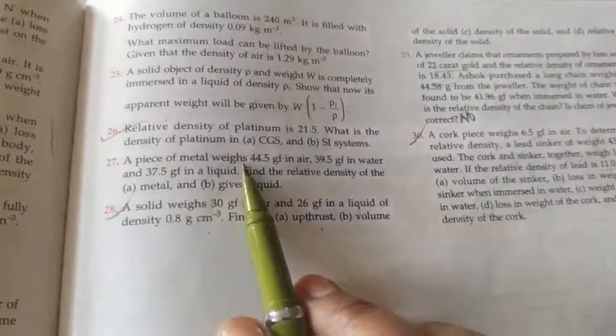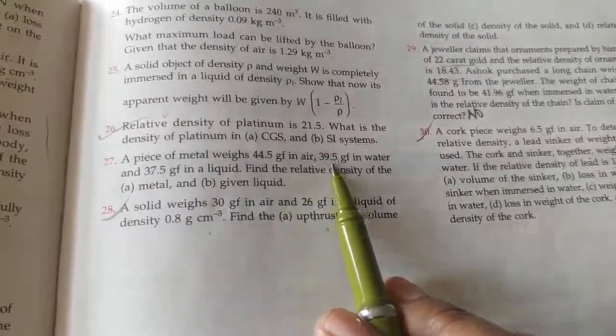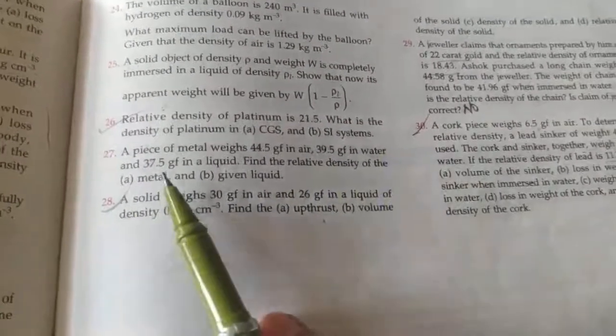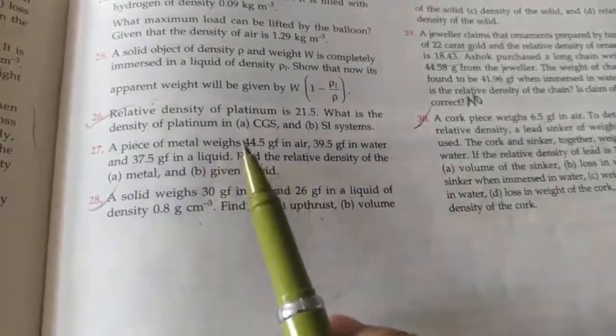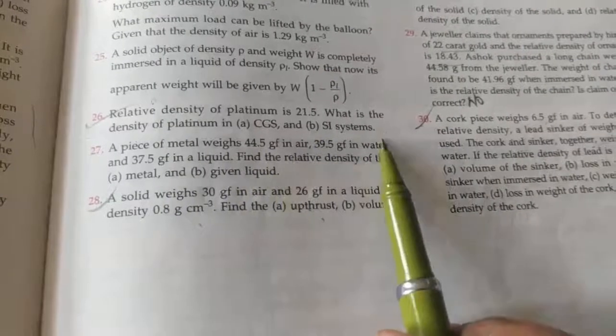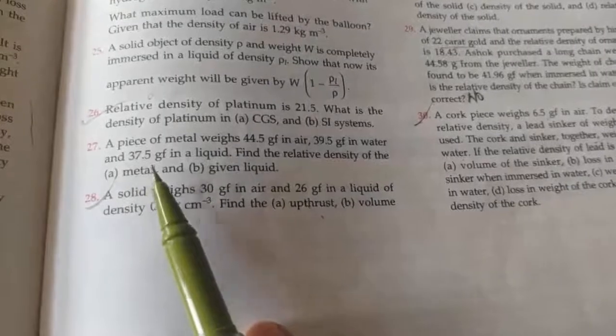Here the metal weight is 44.5 gf in air, 39.5 gf in water and 37.5 gf in liquid. So here the metal's weight is given differently, in air it is 44.5 gf, in water it is 39.5 gf, and in liquid it is 37.5.